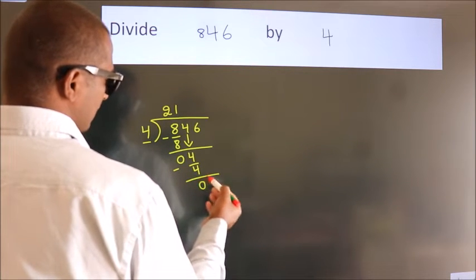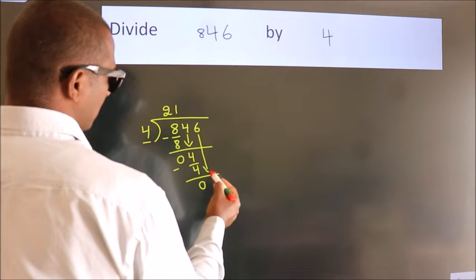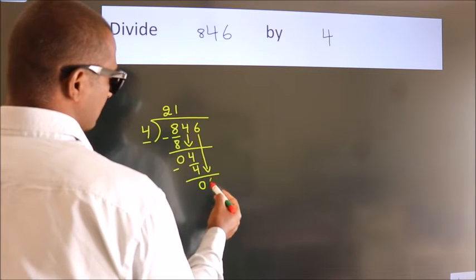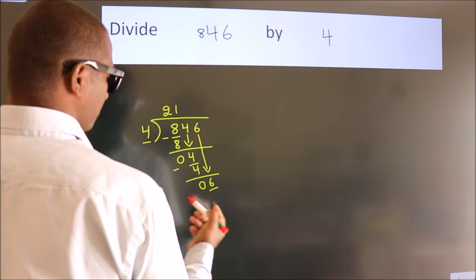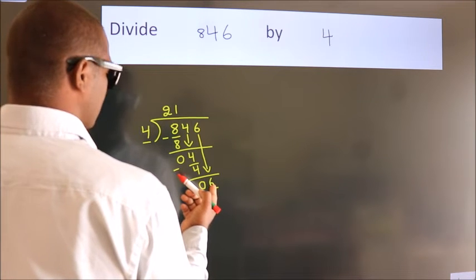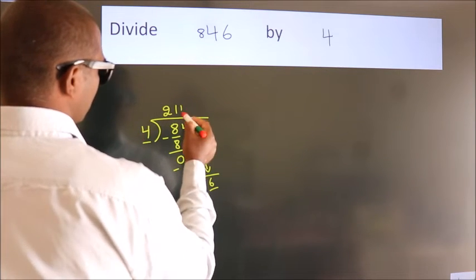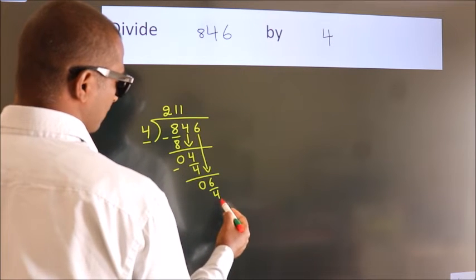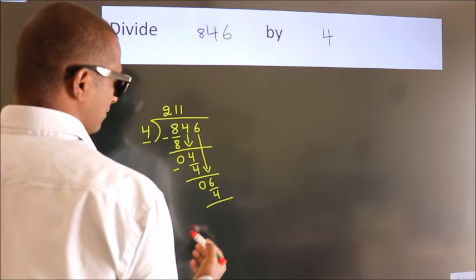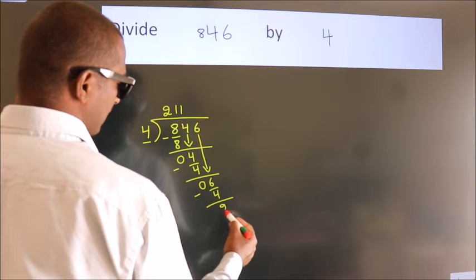After this, bring down the beside number, so 6 down, so 6. A number close to 6 in 4 table is 4 ones, 4. Now we subtract, we get 2.